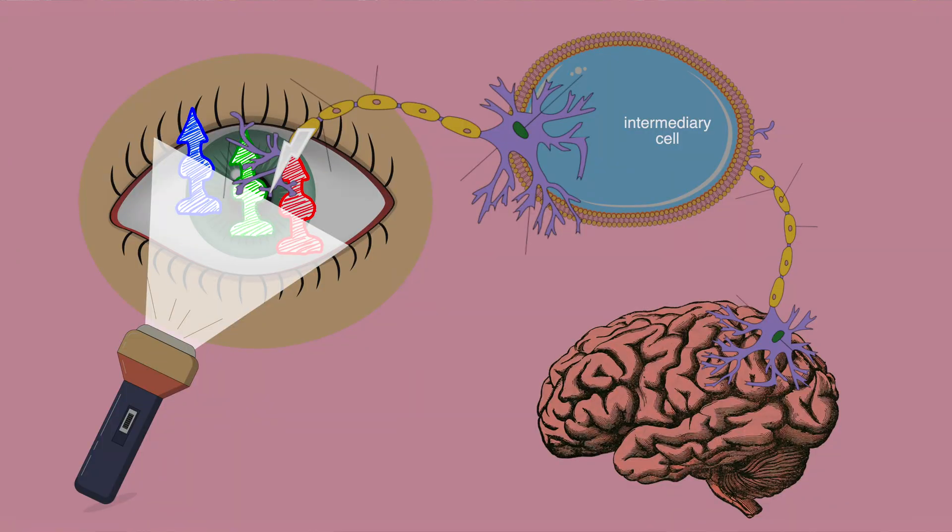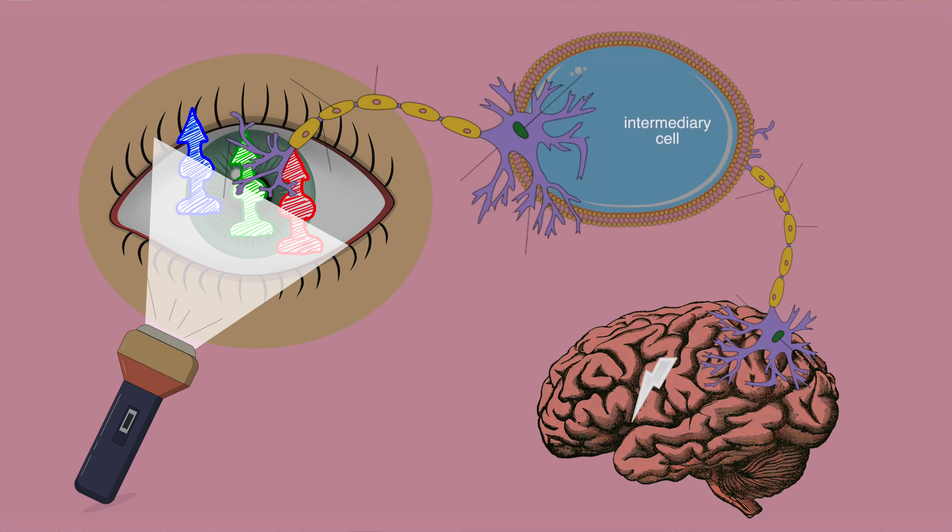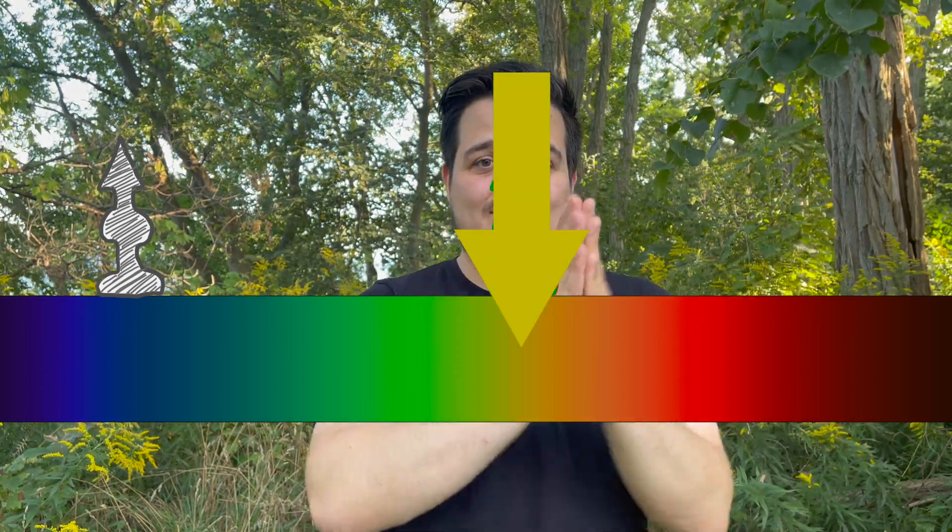The actual way our brain calculates the total value of the signal from the cone cells is more complicated — it's called the opponent process theory, which involves intermediary cells that get the signal from the cones, do some calculation, and send that result to the brain. But to simplify, we can say our brain averages out the signals it gets from the different cones to a specific color. So if our red and green cones are both excited, the brain averages it out to what's in between them — yellow.